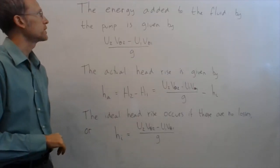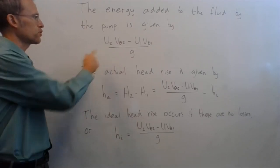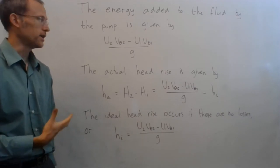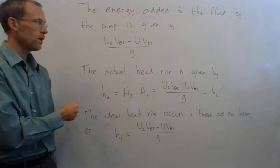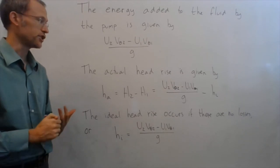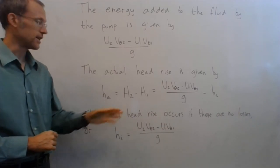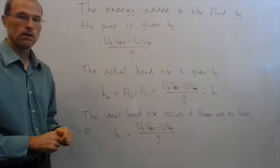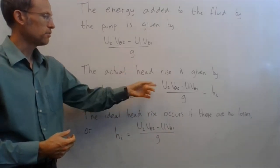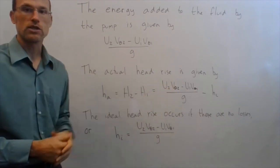So looking at that equation, you can see that the energy added to the fluid by the pump is given by this term, u2 V theta 2 minus u1 V theta 1 divided by g, that's my energy being put into the system. Actual head rise, so amount of pressure or height or velocity that this pump's actually adding, h_a is just those two terms, h2 minus h1, so again that's where your velocity and pressure or height is in there, that's going to be equal to the energy added by the pump, u2 V theta 2 minus u1 V theta 1 over g, minus any losses, so any energy being taken out of the system.